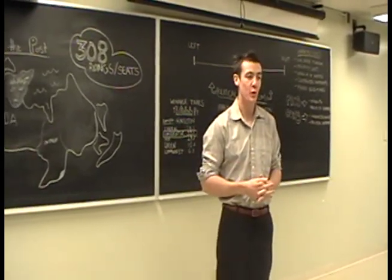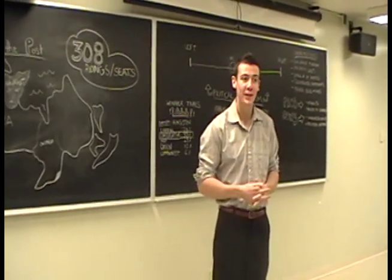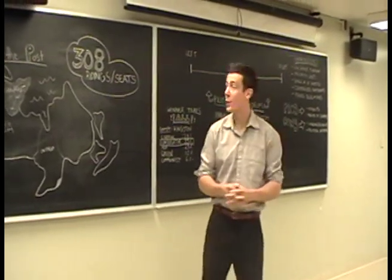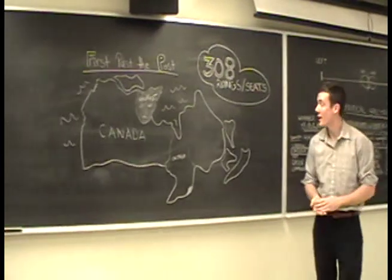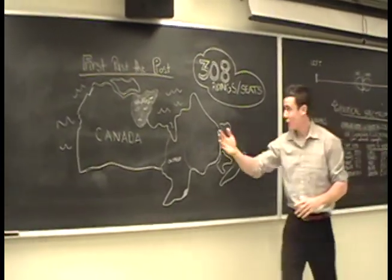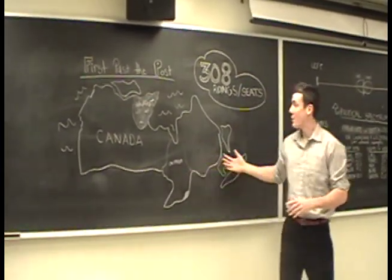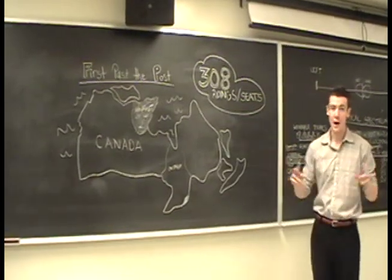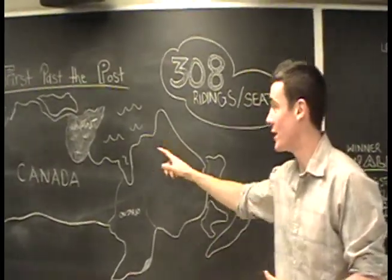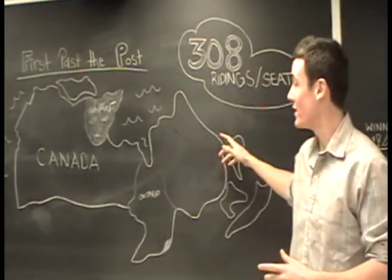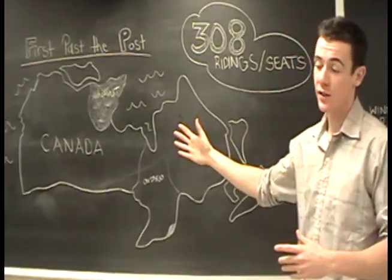So, Canada is well-known for its single-member plurality system, also known as first-past-the-post. Now, the important thing for you guys to remember here is that all of Canada is broken up into 308 ridings or constituencies. The way that they're divided up isn't by equal size.